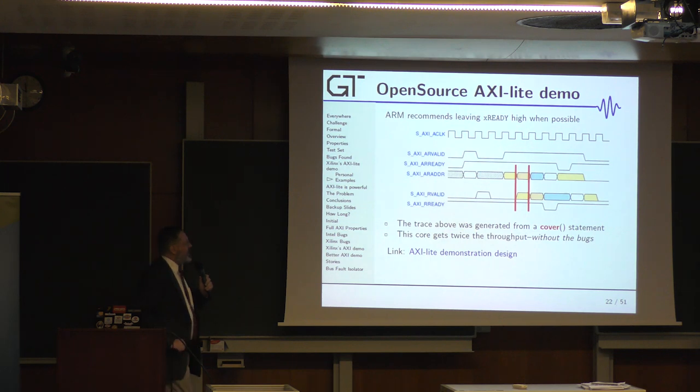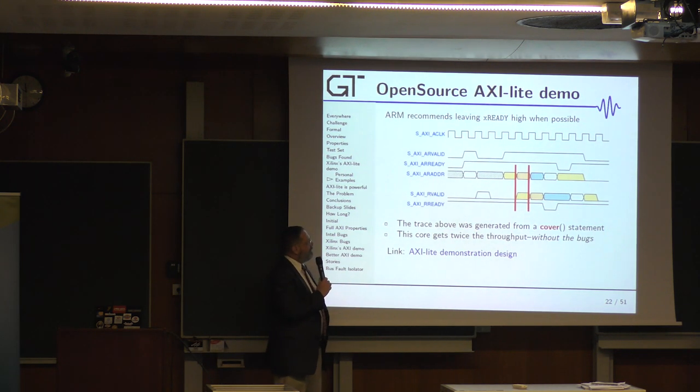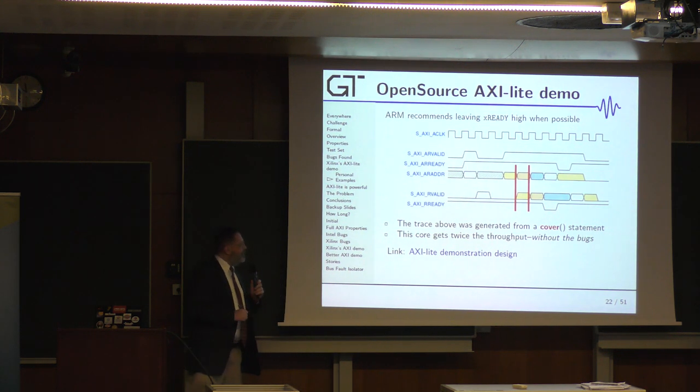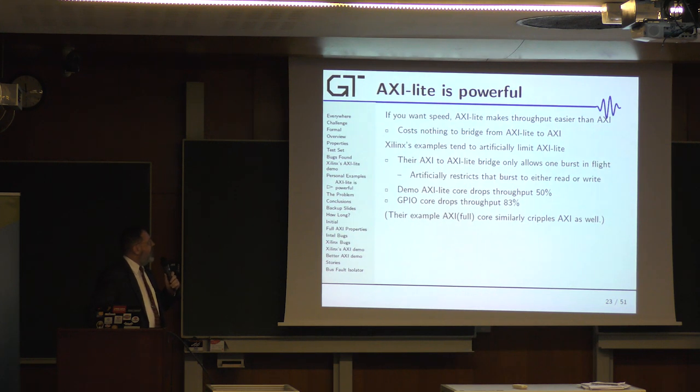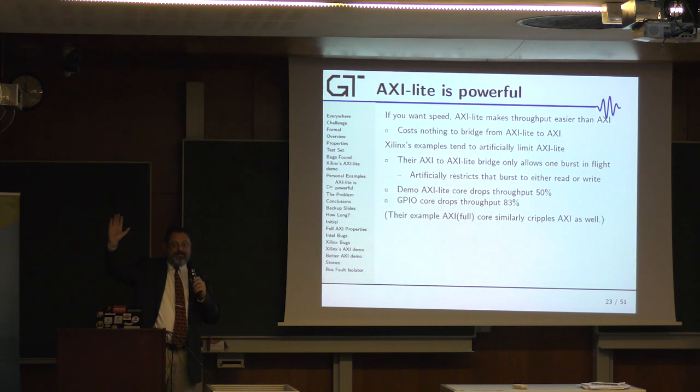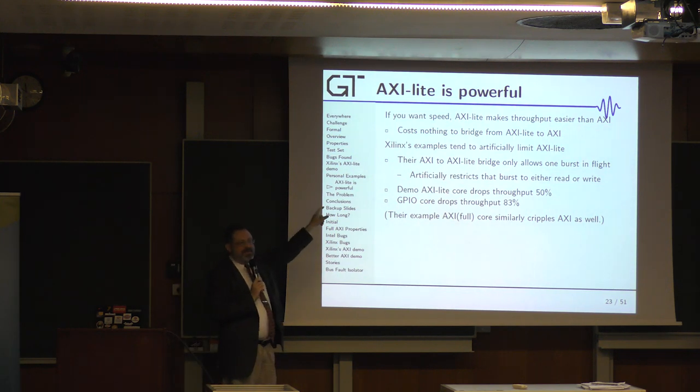So here we go. The open source AXI Demo that I have, you'll notice it gets 100% throughput. Every clock is used. And that was just generated from a formal cover statement. If you want speed, AXI Lite, okay, I like Wishbone. I'll be honest. Wishbone pipeline, it's my favorite. But you can just about do the same thing with AXI Lite. It's just about as good enough.